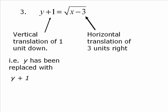And then for the x - 3, this tells me it's a horizontal translation of 3 units right. And that's the way it's always been. The sign is opposite. So x has been replaced with x - 3. So the rules are really the same at the substitution level.